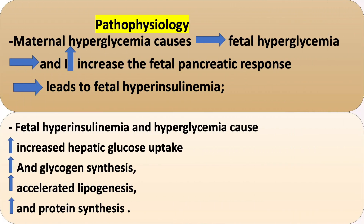Pathophysiology: Maternal hyperglycemia causes fetal hyperglycemia and increases the fetal pancreatic response, leading to fetal hyperinsulinemia. Fetal hyperinsulinemia and hyperglycemia cause increased hepatic glucose uptake and glycogen synthesis, accelerated lipogenesis, and protein synthesis.